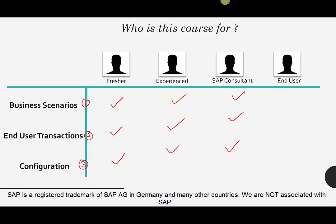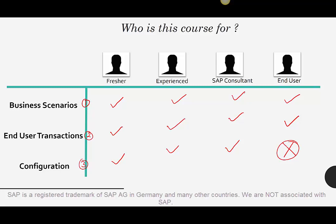An end user, on the other hand, will need to know end user transactions and maybe business scenarios, but does not need configuration. So this is the matrix of the type of people who can take this course and what they need. This course covers all three pieces: business scenarios, end user transactions, and configuration.